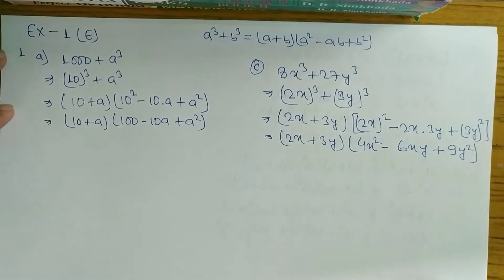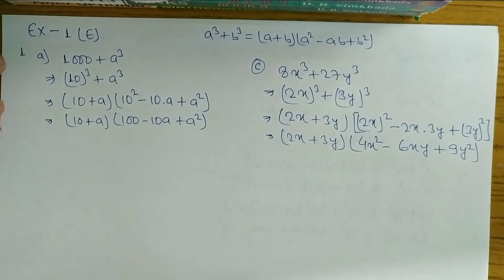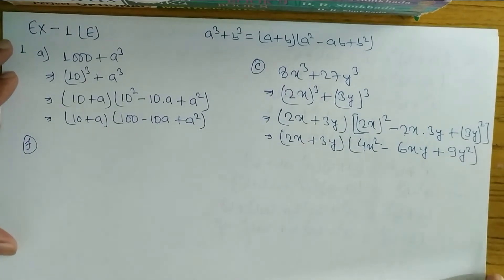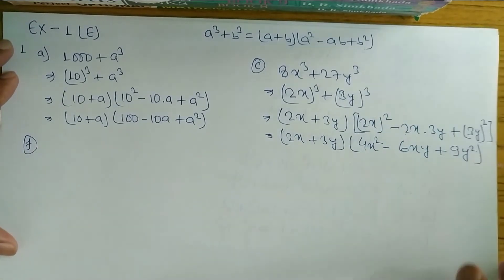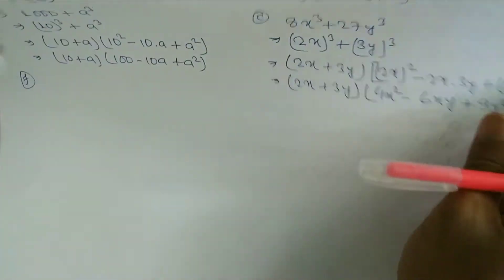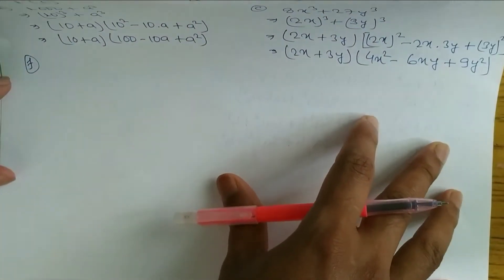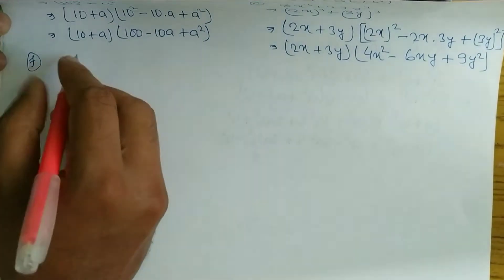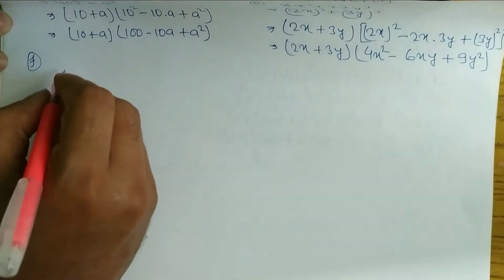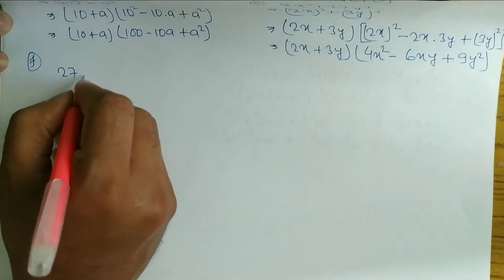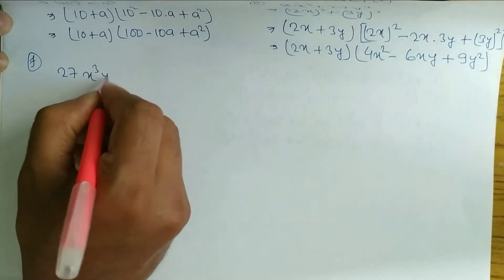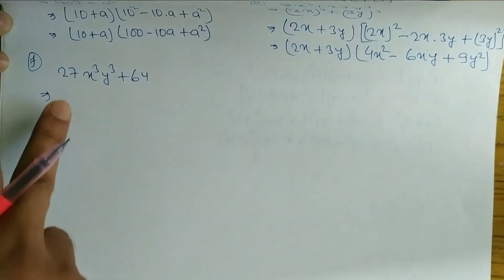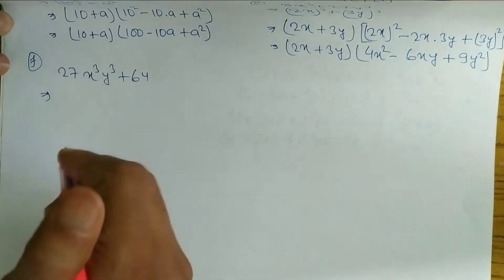Questions 1A and 1C are done. Questions 1D and 1E follow the same process — you can do them yourself. If you have any confusion, you can comment. Now look at question number 1F: 27X cube Y cube plus 64. We have to convert both terms into the form of a whole cube.